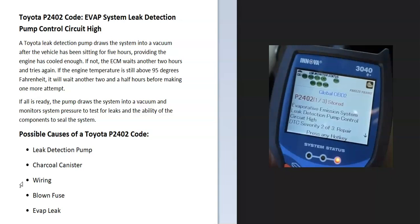Modern cars have an EVAP system that basically takes all the gas vapors from the gas tank and feeds them back into the engine to get burned off. This is for emissions, and the onboard computer is seeing a problem with this, so it's going to have to be troubleshot.